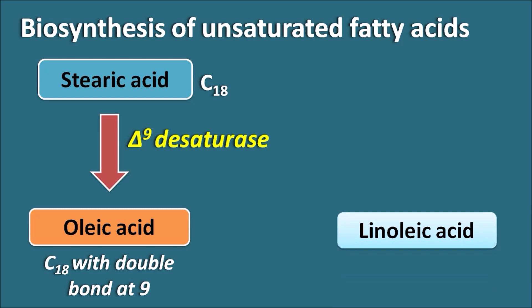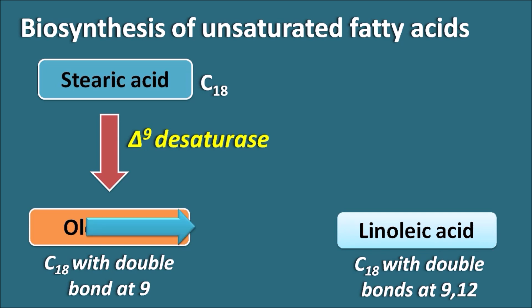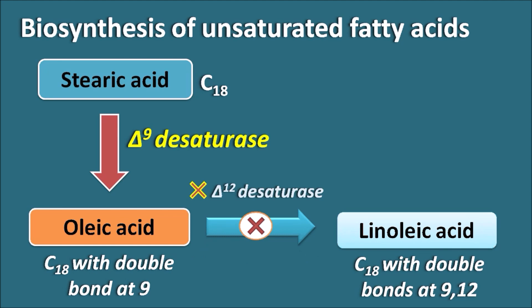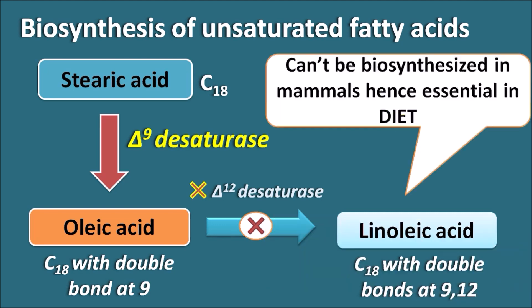Linoleic acid is a C18 unsaturated fatty acid with two double bonds. The difference between oleic acid and linoleic acid is that oleic acid has only one double bond but linoleic acid has two. Oleic acid cannot be converted into linoleic acid because that would require an enzyme introducing a double bond at the 12th position — a delta-12 desaturase. However, no such enzyme exists in mammals, so linoleic acid cannot be biosynthesized from oleic acid. That is why linoleic acid is an essential fatty acid that must be supplied in the diet. Mammals do not have an enzyme that can produce a double bond beyond the ninth position.